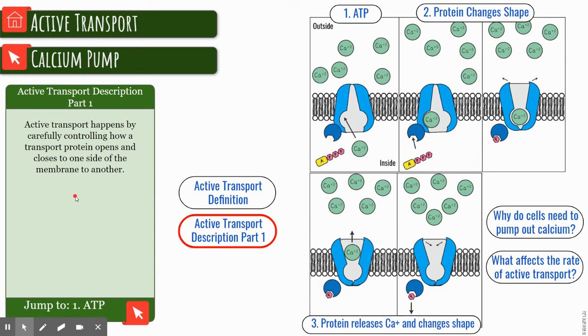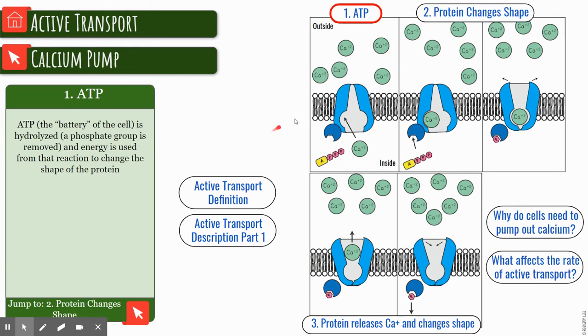This happens by carefully controlling how and when different protein channels open and close. It also involves the use of this molecule called ATP, adenosine triphosphate. It's kind of like a battery that gives the energy and the phosphate group. You can see here there's adenosine, we have three phosphates, and you notice later on that a phosphate has been removed.